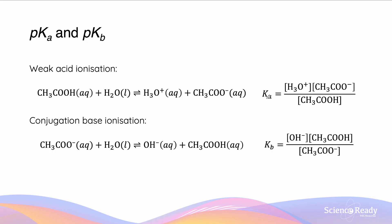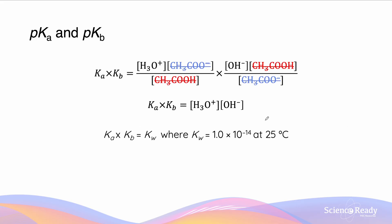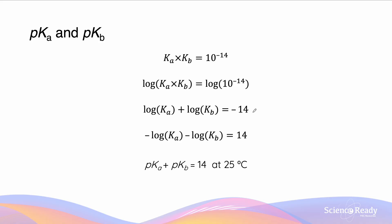Ka and Kb have a particular relationship. Ka is given as the products over reactants for acid dissociation, and Kb similarly for base dissociation. When multiplied together, terms cancel such that Ka × Kb = [H₃O⁺][OH⁻] = Kw = 1 × 10⁻¹⁴ at 25°C.